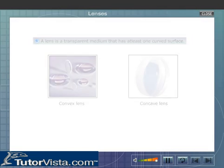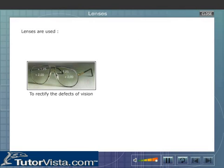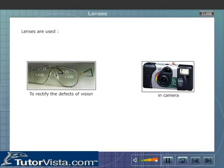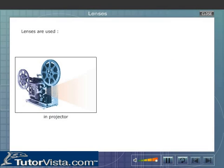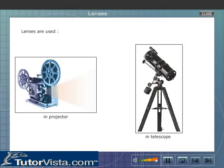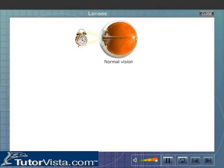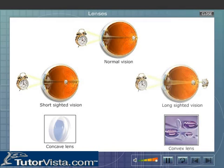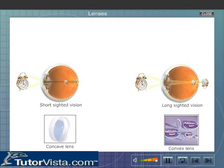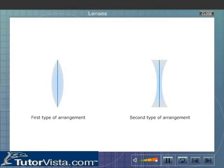You are aware that lenses are used to rectify the defects of vision in cameras, in projectors, in telescopes and in microscopes. The lenses used to rectify short sight and long sight, the defects of vision, are of different types. Let us now see why these lenses are different.